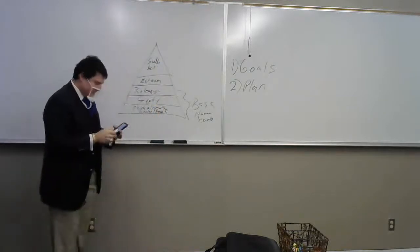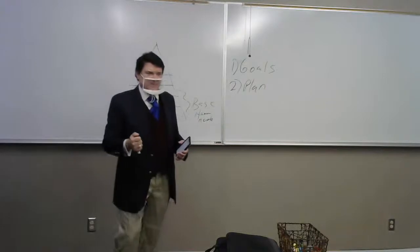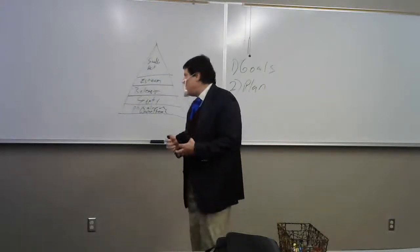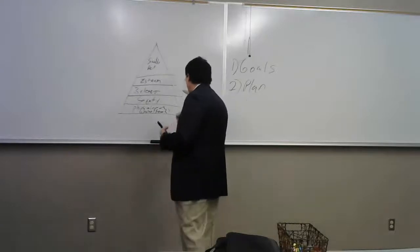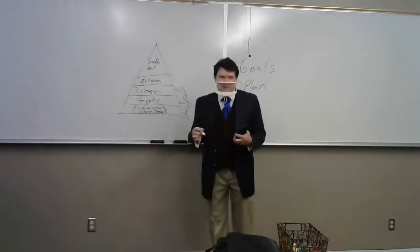The next layer is belonging, esteem, and then self-actualization. Now, Maslow intimates in this scheme that you cannot move from one level to the next unless the needs at that lower level are satisfied.